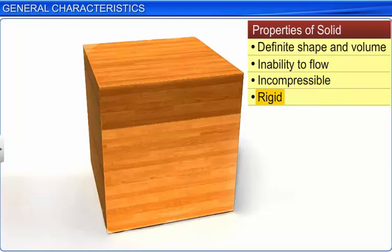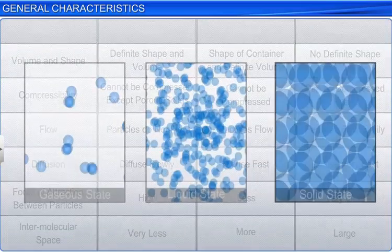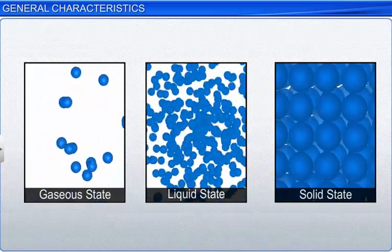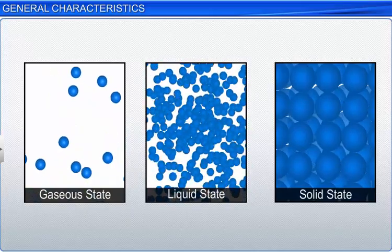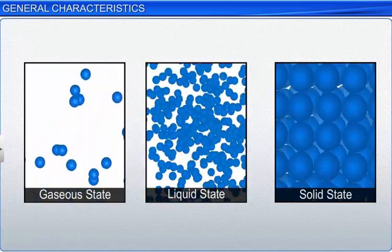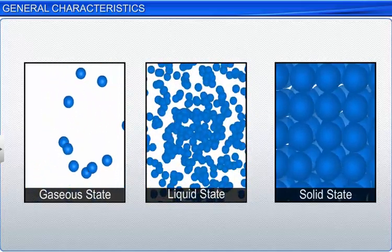In general, the distinct properties of the three different states can be attributed to the arrangement of the constituent particles. In other words, any change in the arrangement of these constituent particles changes the physical state of a substance. In turn, the arrangement of the constituent particles in a particular substance depends upon the external conditions of temperature and pressure.